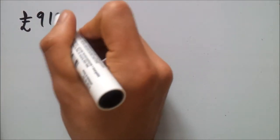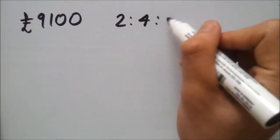Let's say we had 9,100 pounds and you were told to split in the ratio of 2, 4, 7.